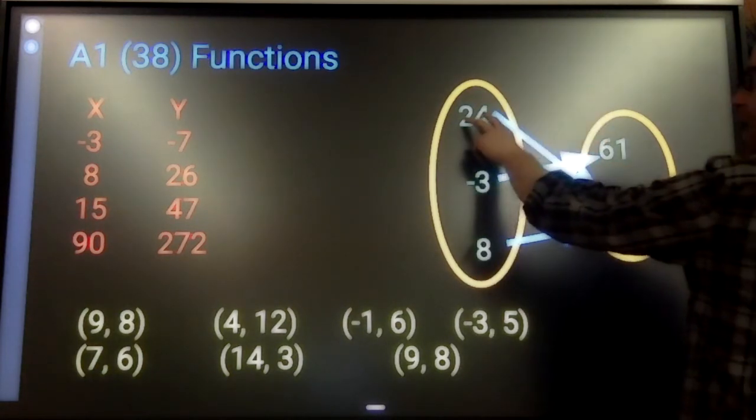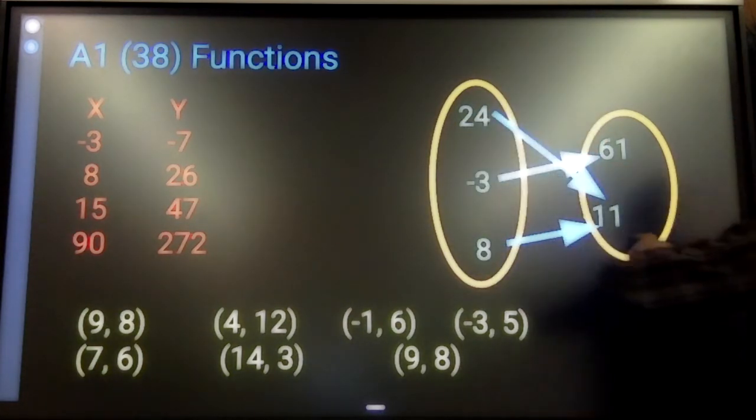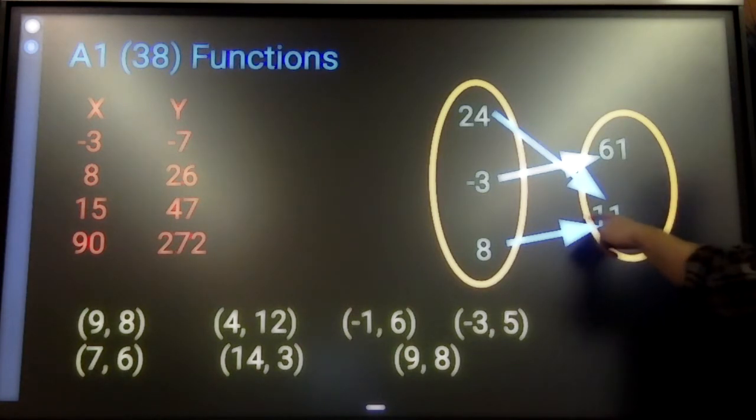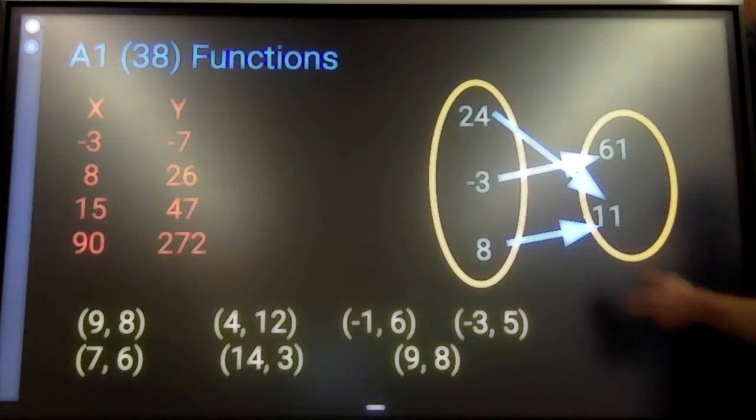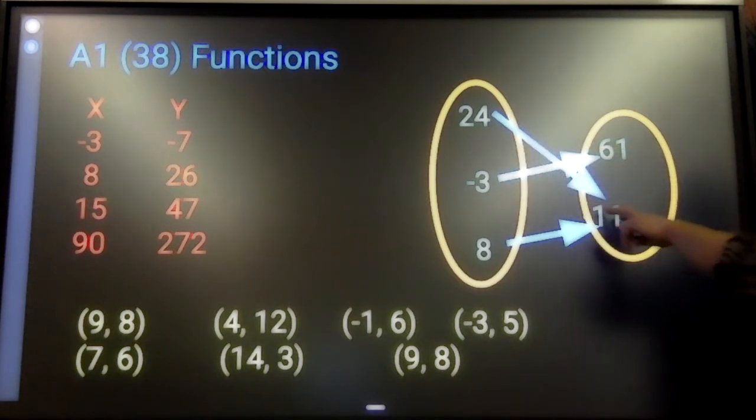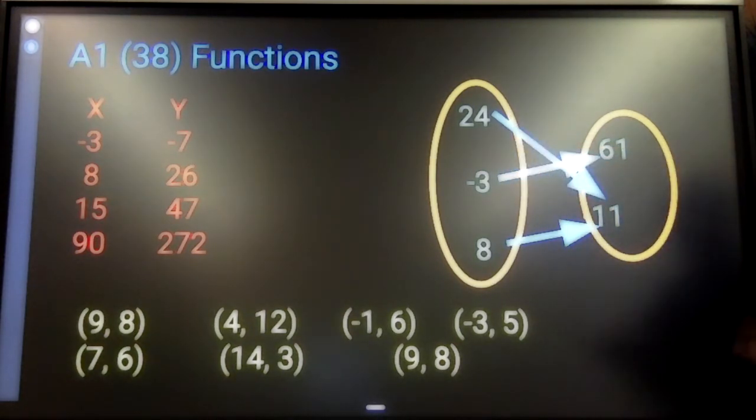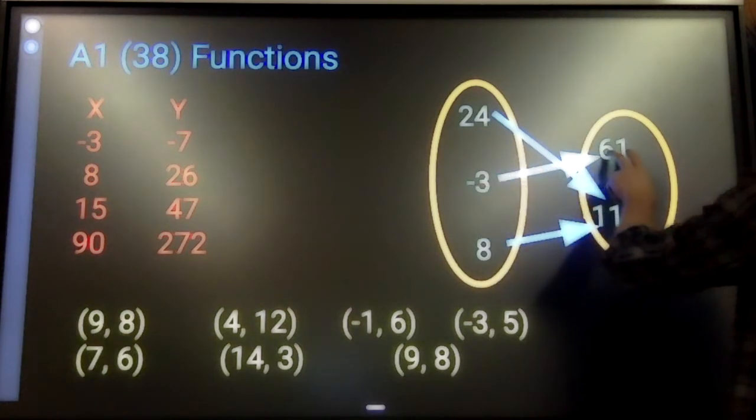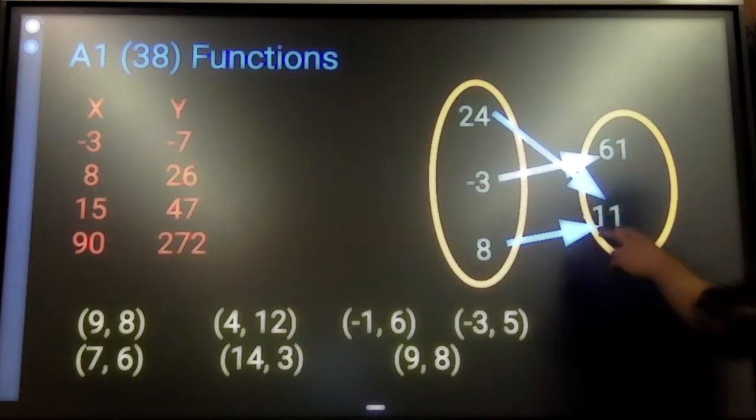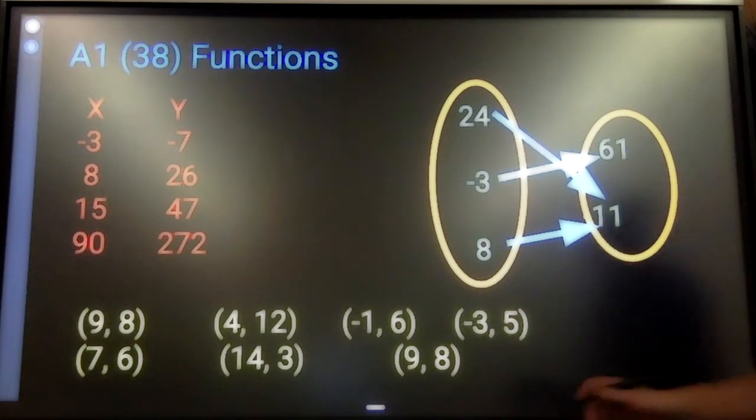It's fine. Every time I put in a 24, I get a negative 11. You can't see the negative, it's behind the circle, so it looks like positive to you. But every time I put in 24, I get this negative 11. That's functional. Every time I put in negative 3, I get 61. Every time I put in 8, I get negative 11. That's a functional situation.